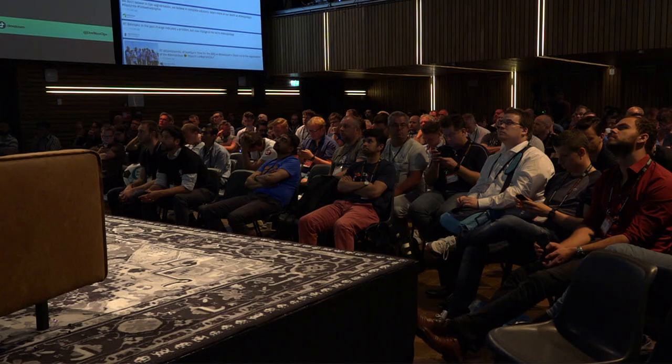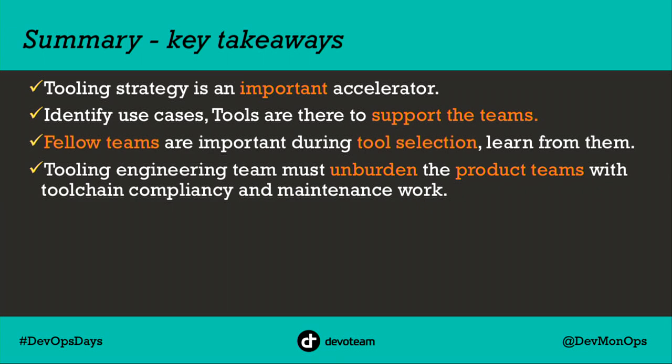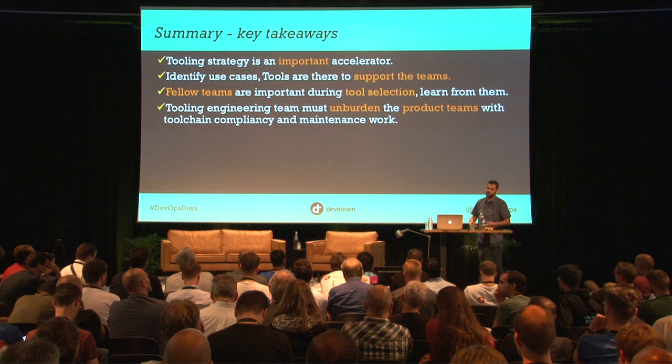Use your fellow teams and fellow companies instead of doing tool selection with your vendors. Learn from them, and then look at the vendors. Your teams are your diamonds, your best friends — they know what they want to do, they are the experts in delivering their product. The tooling engineering team should unburden the product teams from tool chain, compliancy, and maintenance work. It's really about focusing on the product you're going to deliver, and the tools are there to support you, to bring work to production, and to deliver focus on your work.